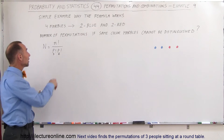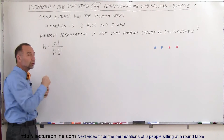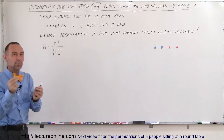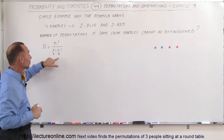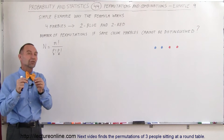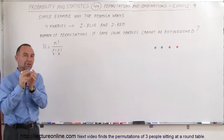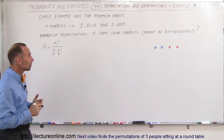divided by the number of permutations for the blue — how many ways we can rearrange the blues if they can be distinguished — times the number of permutations of the red by themselves, again if the reds can be distinguished.